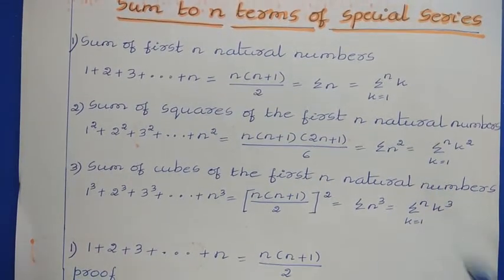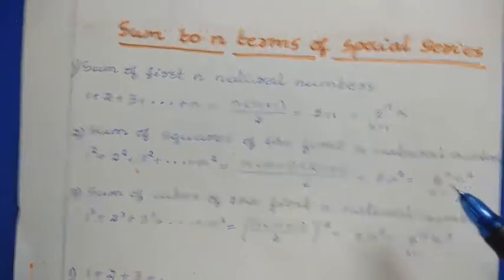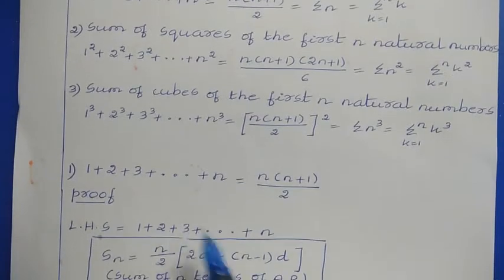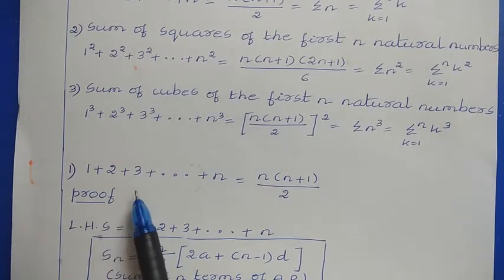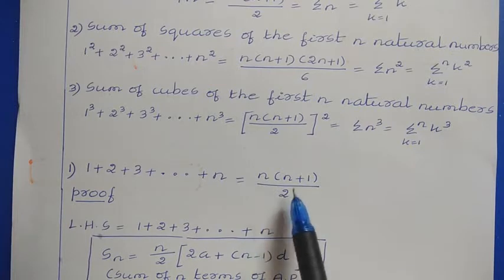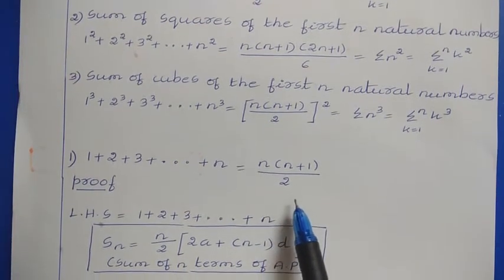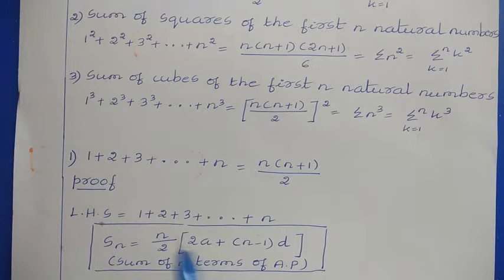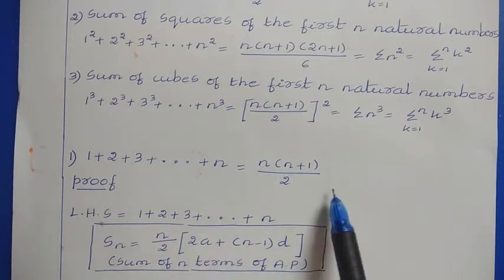Now let us prove these series values. Here we have first one, that is the sum of first n natural numbers, which we have taken as 1 plus 2 plus 3 and so on up to plus n, that is equal to n into n plus 1 divided by 2. Here I am taking the left hand side and then I am trying to reach to the right hand side.